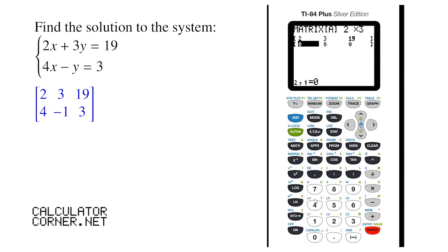The next row is 4, negative 1, and 3. Be sure to press enter after each element. Now go back to the home screen by doing second quit.